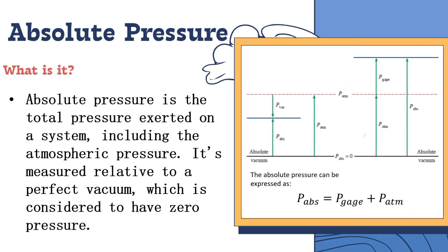To better understand the equation, let us look at the right side of the diagram. As you can see, the arrow of the absolute pressure starts at the absolute vacuum, passing through the atmospheric pressure all the way through the gauge pressure. This means that absolute pressure is the sum of gauge pressure and atmospheric pressure.